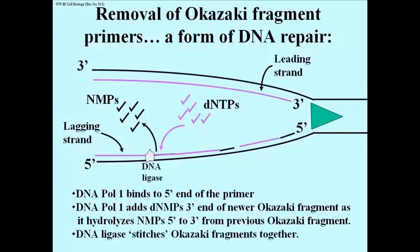In the final step, when all of the RNA is replaced by DNA, DNA ligase comes in and catalyzes phosphodiester bond formation between the abutting Okazaki fragments.